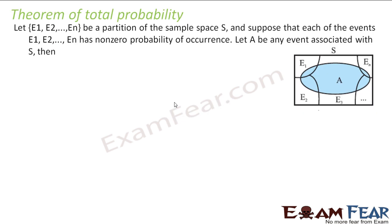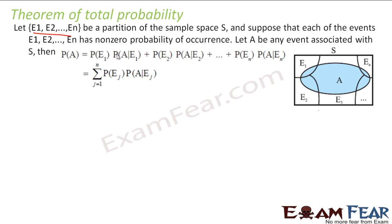Now let us take the theorem of total probability. If I have already partitioned my sample space into segments e1 to en, and each of these events has non-zero probabilities, and let A be any event whose probability I want to find, then the probability of A equals: probability of e1 times probability of A given e1, plus probability of e2 times probability of A given e2, and so on till the nth event times probability of A given en. That is what the theorem of total probability says.